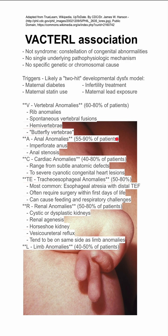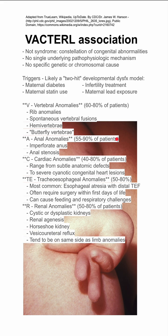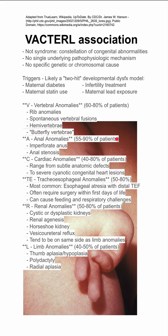L is for limb abnormalities, seen in the background here, occurring in 40% to 50% of patients. These can include thumb aplasia, hypoplasia, polydactyly, and radial aplasia.